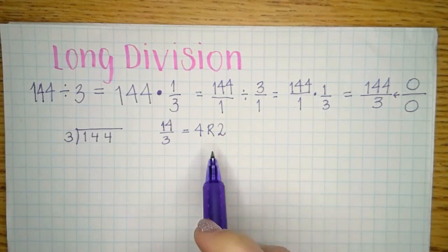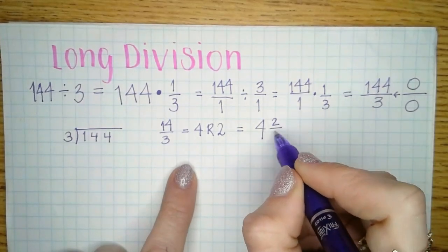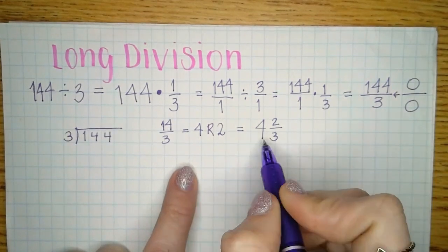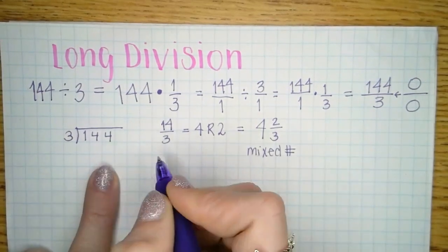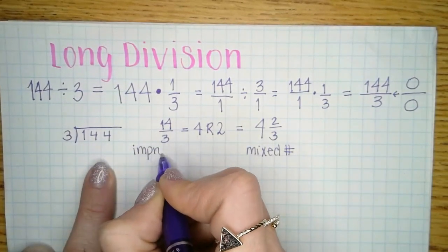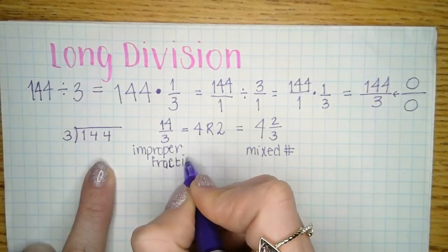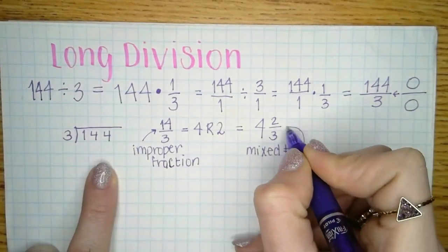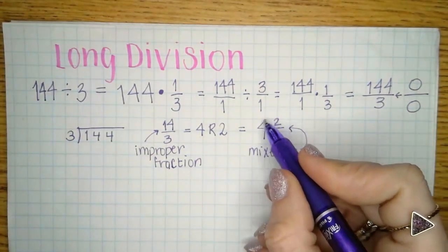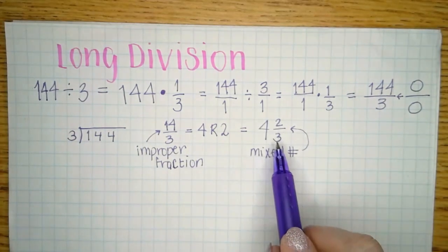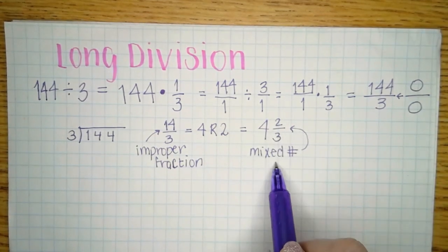Sometimes you wrote it as a mixed number like 4 and two-thirds. This thing right here is a mixed number. The other form — 14 over 3 — is an improper fraction. For a fraction to be proper, the top has to be smaller than the bottom. If it's the same or bigger, it's improper. So there's the improper fraction and there's the mixed number.